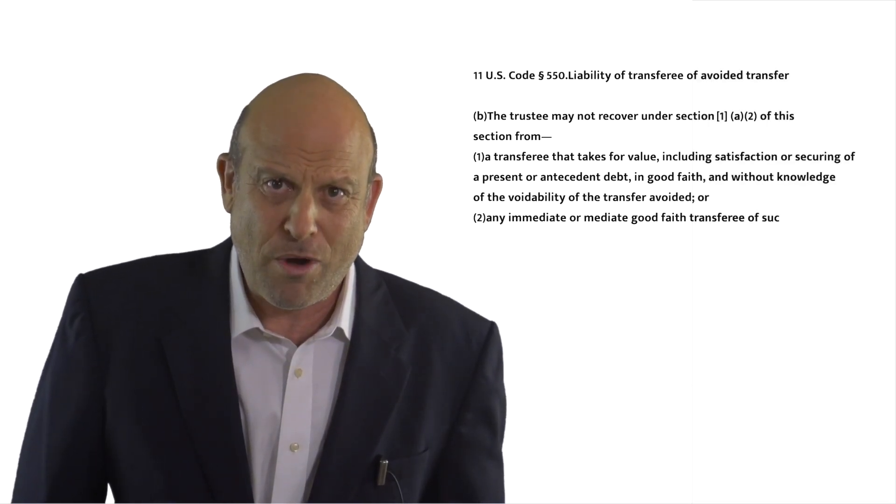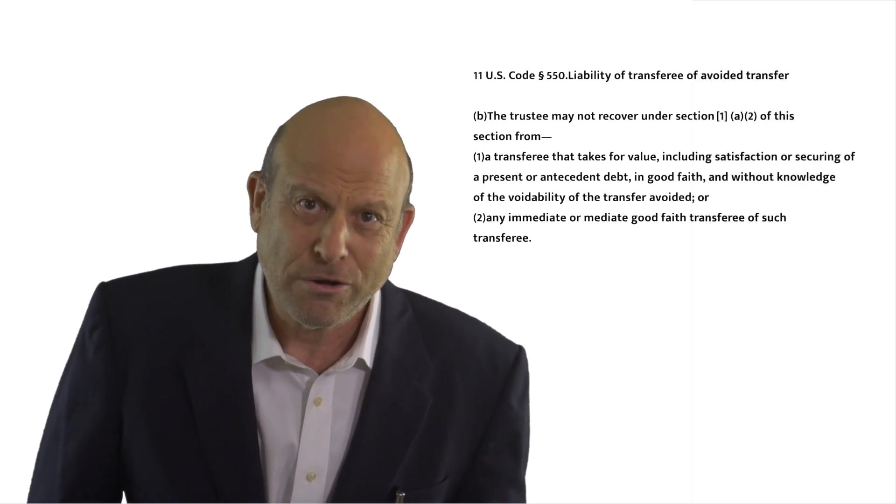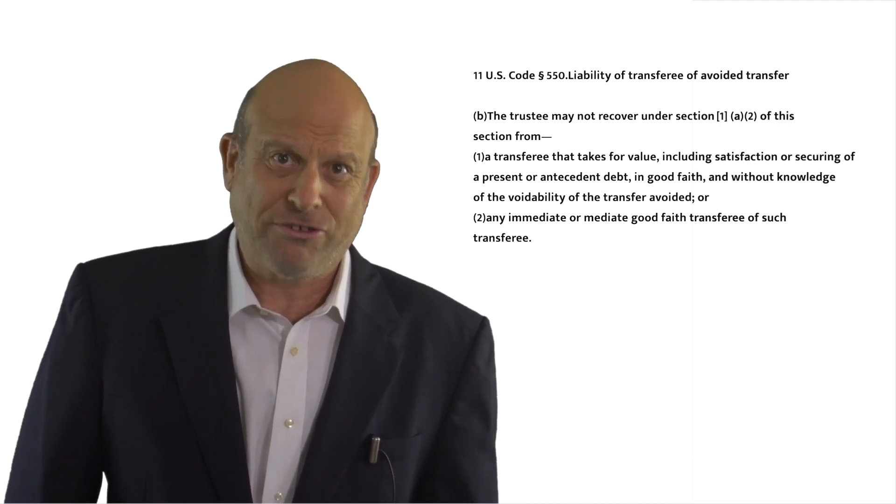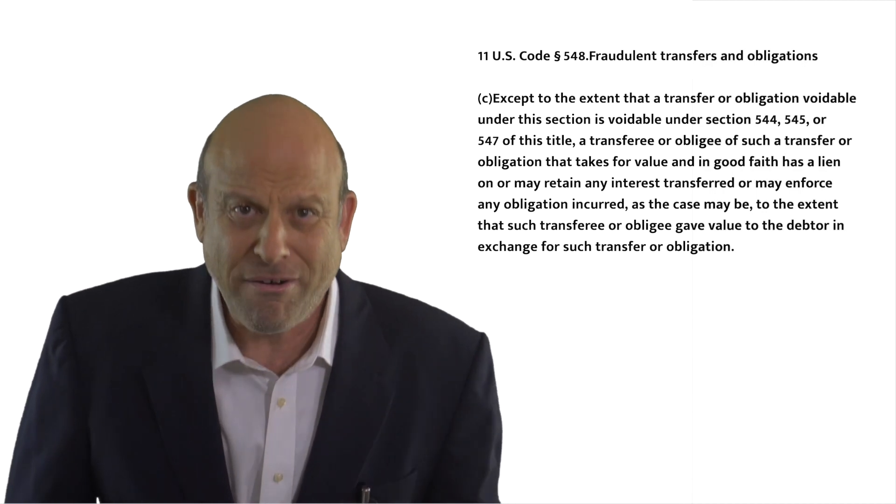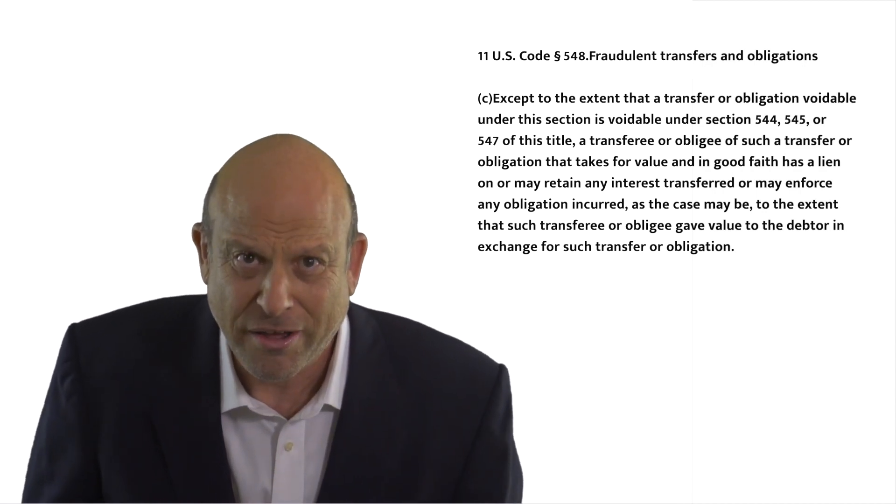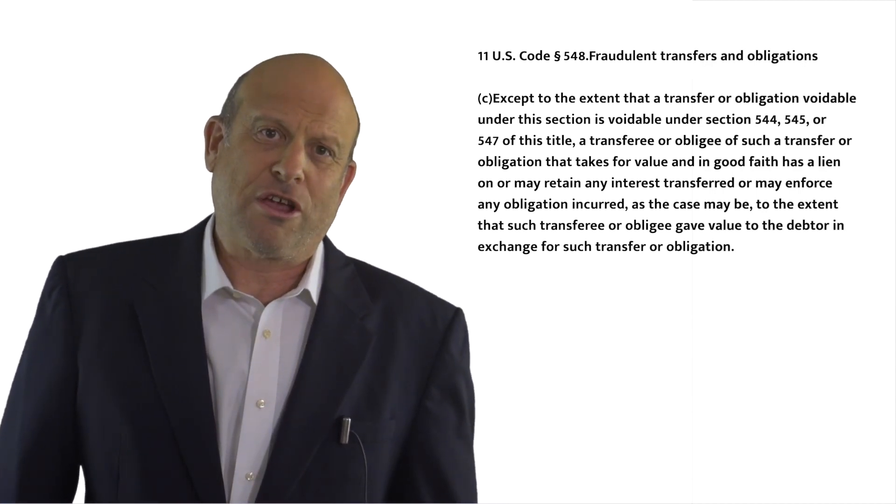Under 550B1, it doesn't matter who got the value as long as value was given, as long as the receiver of those funds gave any kind of value. It doesn't have to go to the debtor. Under 548C, it is imperative that the debtor got the value in exchange for the debtor's money. And that is a huge difference.